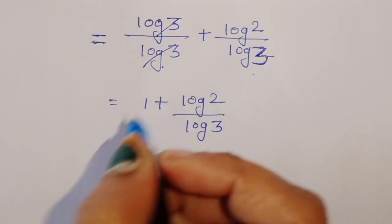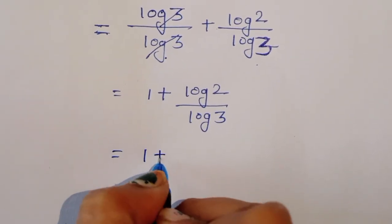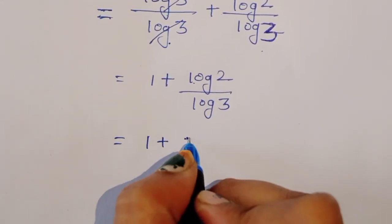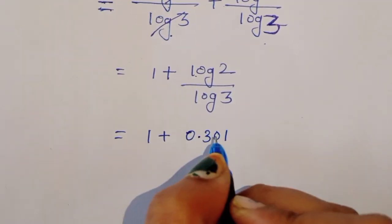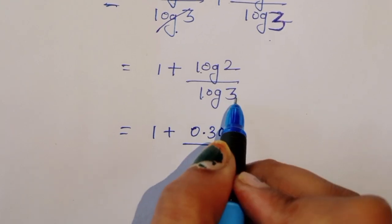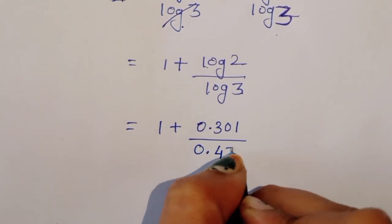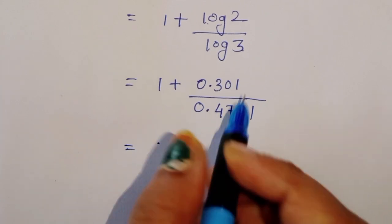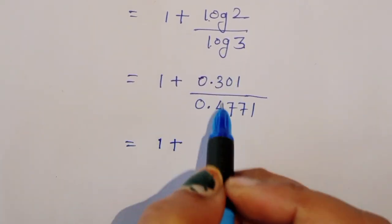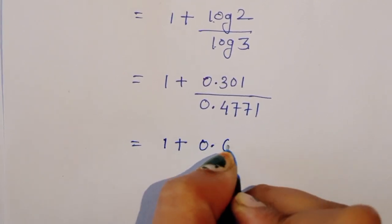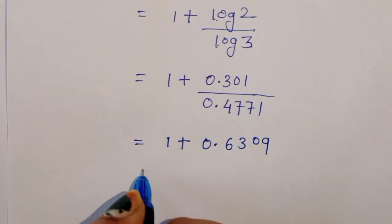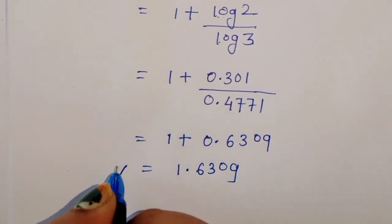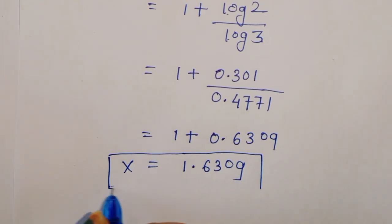So x is equal to 1 plus log of 2 divided by log of 3. When we calculate this, log of 2 is 0.301 and log of 3 is 0.4771. Dividing gives approximately 0.6309, so x equals 1 plus 0.6309, which is 1.6309. This is the value of x.